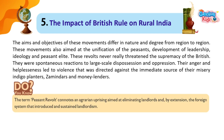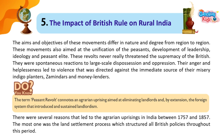Do you know? The term 'Peasant Revolt' connotes an agrarian uprising aimed at eliminating landlords and, by extension, the foreign system that introduced and sustained landlordism. There were several reasons that led to the agrarian uprisings in India between 1757 and 1857. The most important was the land settlement process, which structured all British policies throughout this period.